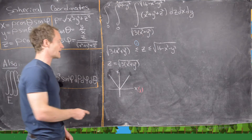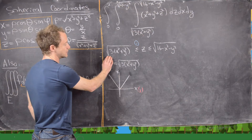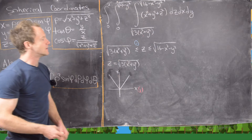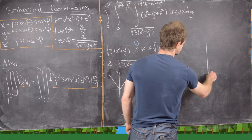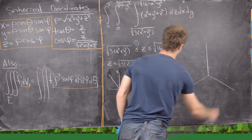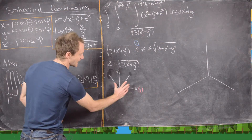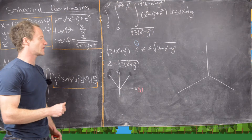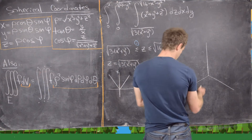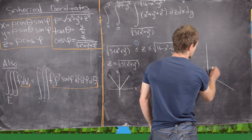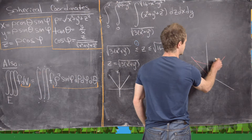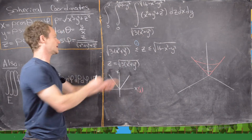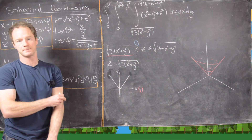If we set z equal to a constant, we get something that's essentially a circle. So our bottom surface is flat on the sides but opens circularly — in other words, it's a cone. So we have this cone opening upward, and that is our lower bounding surface.